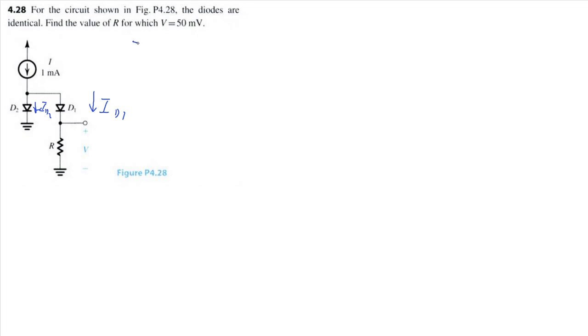Let's start writing out some circuit analysis equations. We know that the current of ID1, using the voltage law of V equals IR, would just be equal to V over R. Using nodal analysis, we have this I of 1 milliamp coming into this node, and we have ID2 and ID1 coming out. Therefore, ID2 is equal to 1 milliamp minus ID1, which is just V over R.